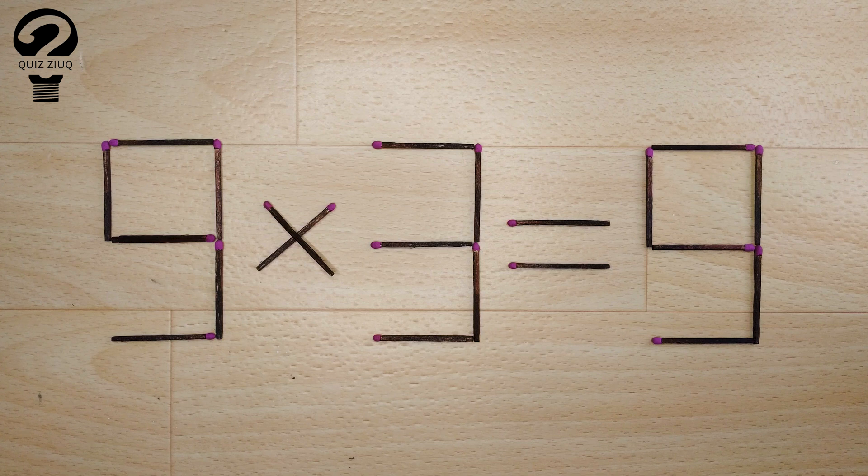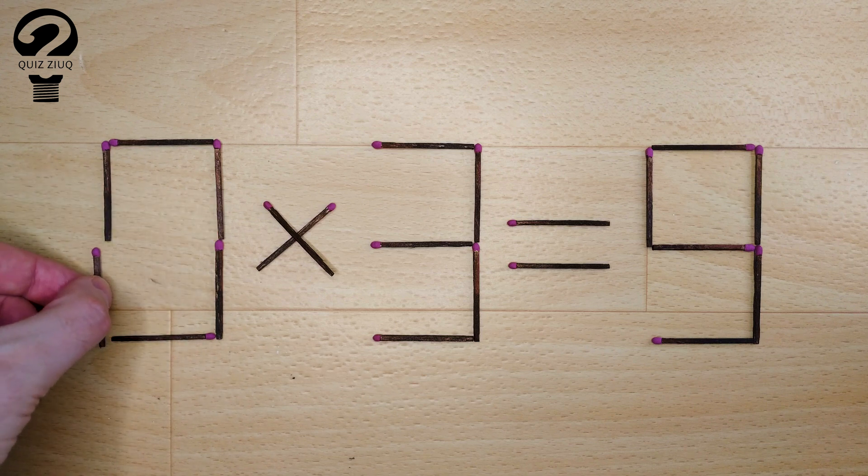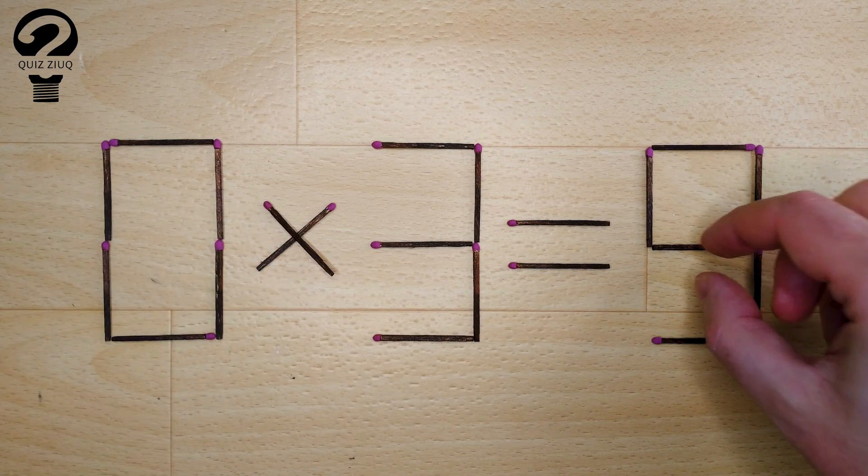How is this little puzzle solved? For this, we just need to move two matches. And now, when we check, 0 times 3 equals 0.